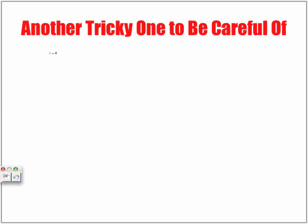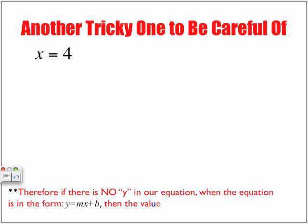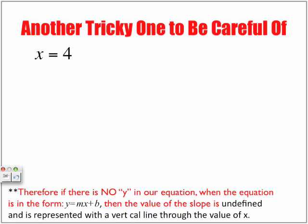Another trick you want to be careful of. X is equal to 4. So, therefore, if there is no Y in our equation, when the equation is in the form Y is equal to MX plus B, then the value of the slope is considered undefined and is represented with a vertical line through the value of X.